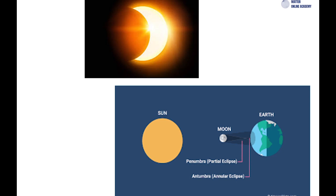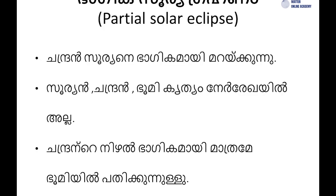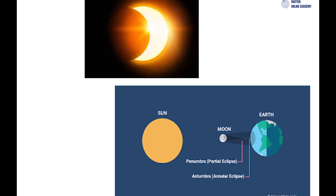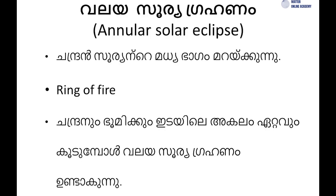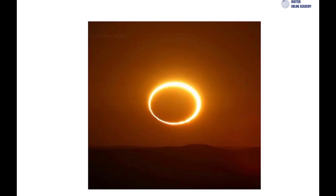If the sun is still in the middle, we will see the sun outside. The sun is to be seen in the middle. The annular solar eclipse is made by the Candra. The third type is the annular solar eclipse.